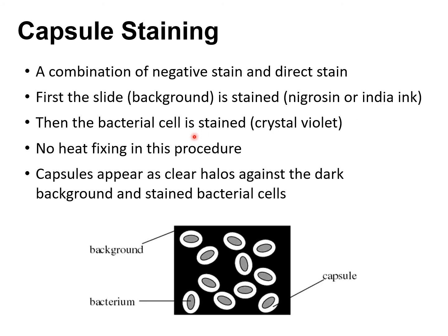After prepping your smear, we do a negative stain using either nigrosin or India ink — these are acidic dyes that stain the background. Then we add a second dye that is accepted by the bacteria cell itself, using a positive or basic dye such as crystal violet. The end result: the background is dark from the nigrosin, and the cell itself is stained with crystal violet. If you see a halo around the bacteria cell, that indicates the presence of capsules. If there is no halo, there are no capsules.